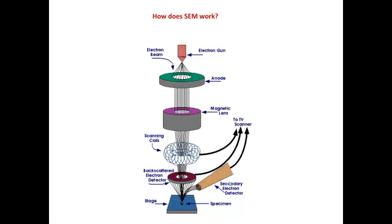So how does the SEM work and what is the light path? Just like the transmission electron microscope, there is an electron gun provided with tungsten filaments that produces electron beams with high voltage. That beam produces light rays that fall on the magnetic lens. In the case of SEM, there is an anode between the condenser and the electron gun.